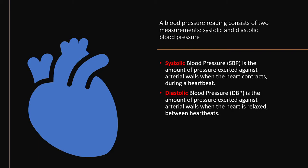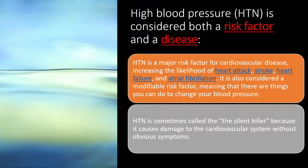Systolic blood pressure is the pressure against the arterial wall when the heart contracts — that boom boom boom you feel when palpating your pulse. Diastolic is the lower number — the pressure exerted against the arterial wall when the heart relaxes between heartbeats. This distinction matters greatly when we discuss cardiac output and systemic vascular resistance.